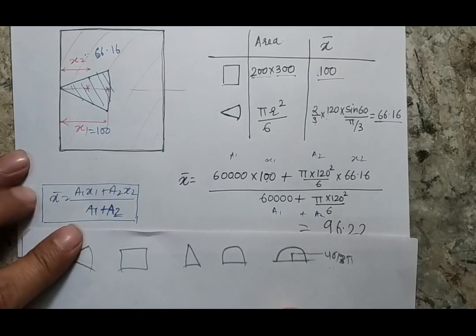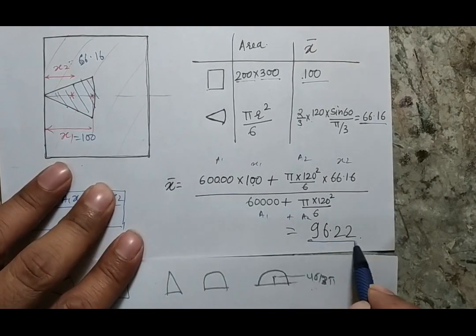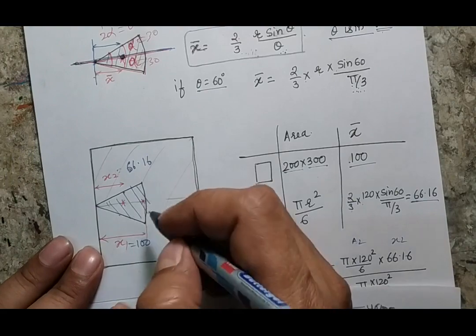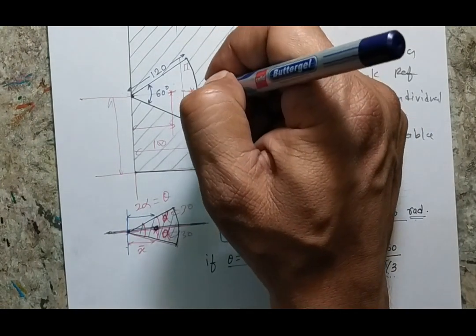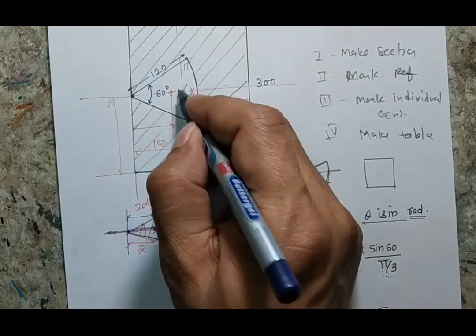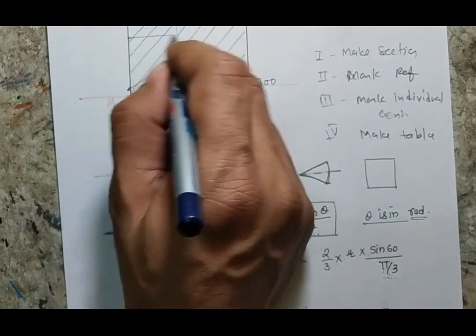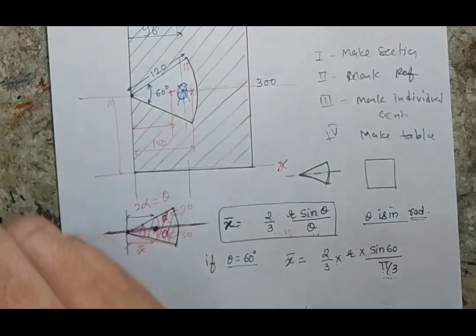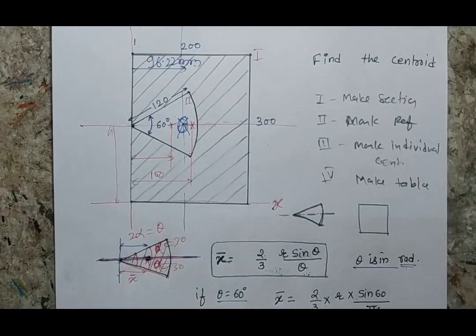Putting the values into the formula, I get the centroid value as 96.22. Since the total width is 200, the centroid lies inside the body at a distance of 96.22 millimeters from the reference. Thank you.